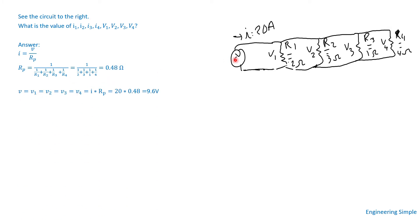We know the voltage across each resistor is the same as the voltage across the source, since the resistances are in parallel with nothing in between. So V equals V1 equals V2 equals V3 equals V4, which equals the total current times the equivalent resistance: I times Rp. With I equal to 20 amps and Rp equal to 0.48 ohms, we get V equals 9.6 volts.